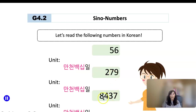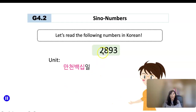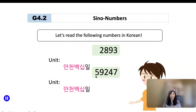How about 8,437? The unit name for thousand is 천. So 팔천사백삼십칠. How about 2,893? 이천팔백구십삼. How about 59,247? We have a unit for 10,000 which is 만, so 오만구천이백사십칠.